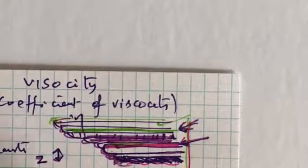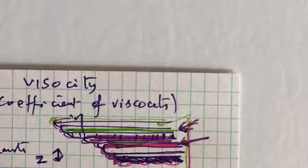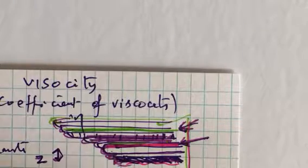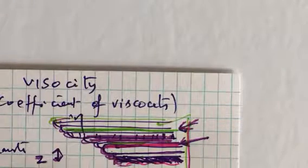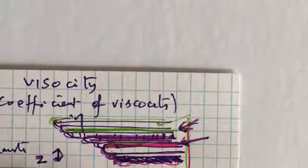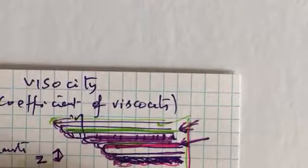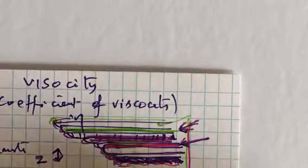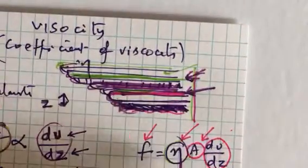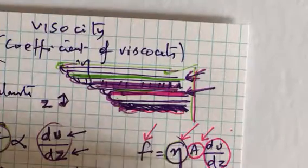Now the force that sustains the flow of a liquid is directly proportional to A into velocity gradient. And now therefore to remove the proportion, I put a constant called eta. F is equal to eta into A into du by dz. F is equal to eta into A into du by dz.